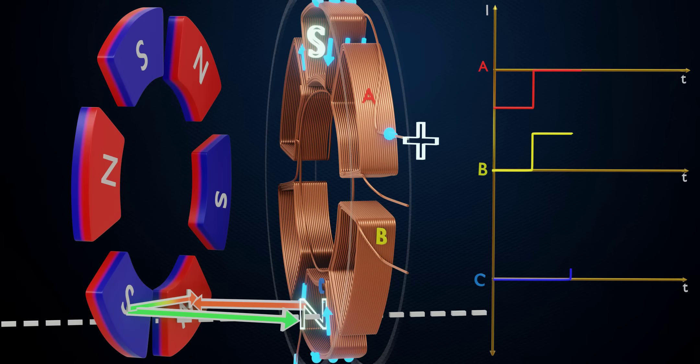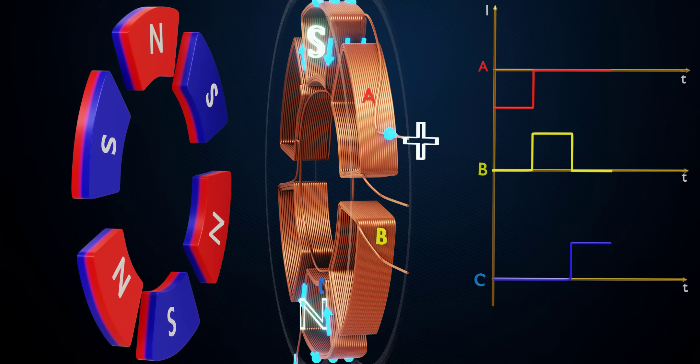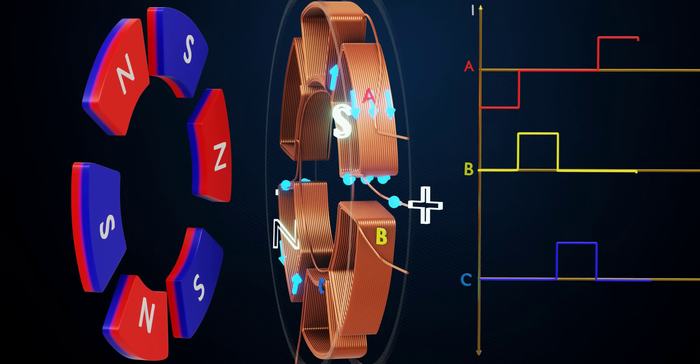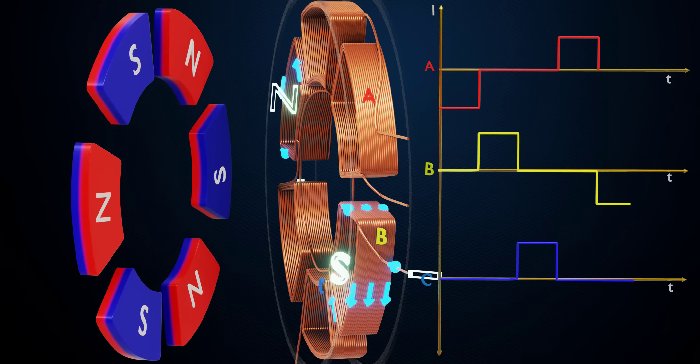Later, coil C gets energized. After that, in the next half rotation, coil A energizes again, but this time with the opposite polarity, just by changing the supply directions. The process constantly repeats and the rotor continues to rotate.